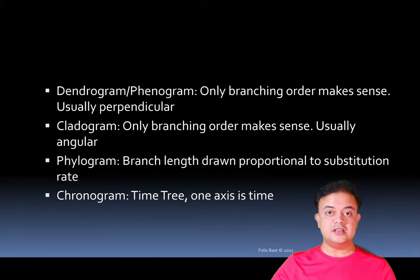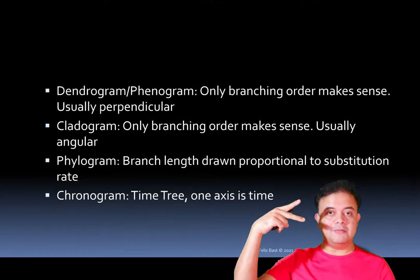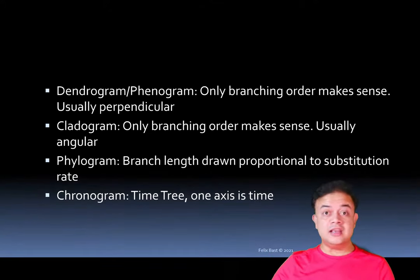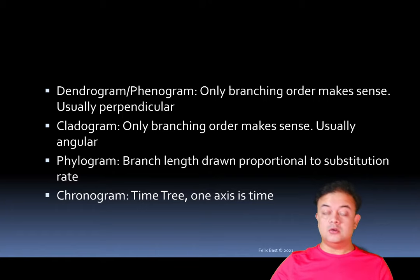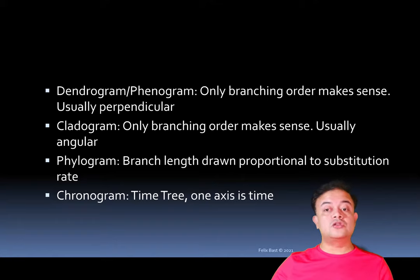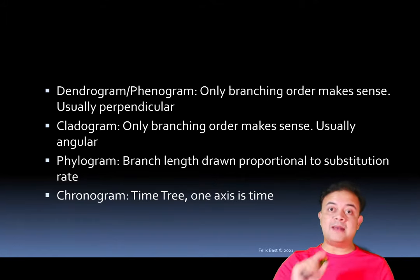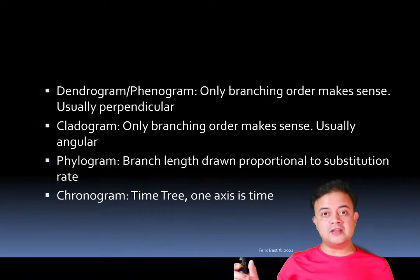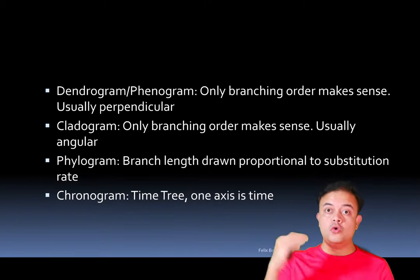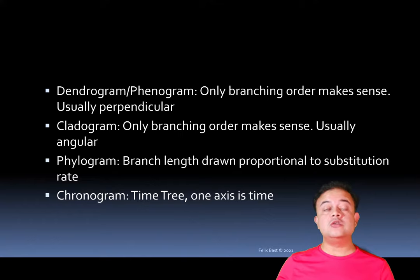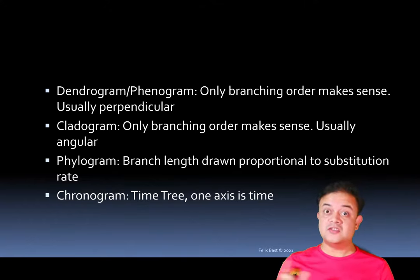If you draw the same thing with angles — as you can see with this kind of angular representation — it is usually called a cladogram. Like a dendrogram, only the branching order makes sense in a cladogram, and it is typically angular. A phylogram, on the other hand, has branch lengths proportional to the substitution rate. It is usually drawn perpendicularly but branch length also makes sense: a longer branch means that leaf is very different from the rest due to more nucleotide substitutions.